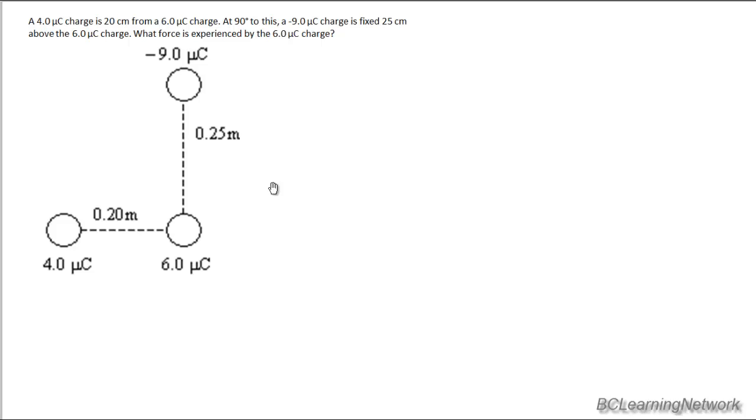Now I like to label my three charges as follows. So my 4 microcoulomb charge, I've labeled charge A. My 6 microcoulomb charge is charge B. And my negative 9 microcoulomb charge will be charge C.